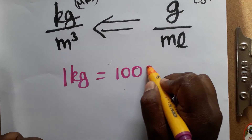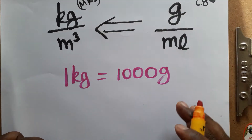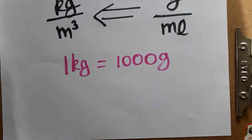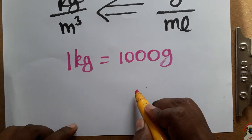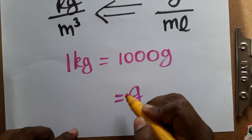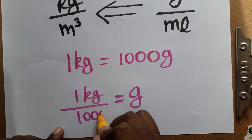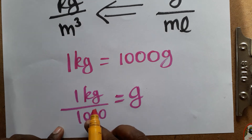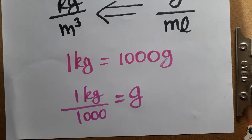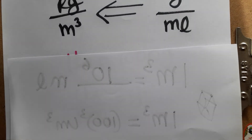One kilogram is a thousand grams. So one gram is equal to one kilogram divided by thousand. Therefore, one gram is equal to 1/1000 kg.